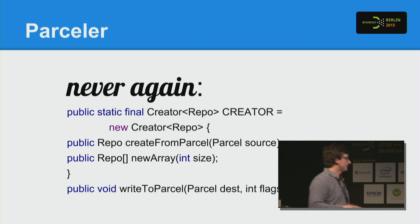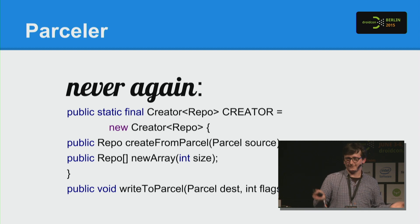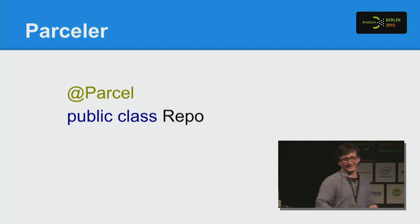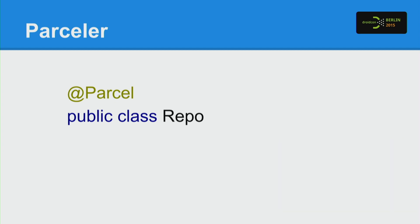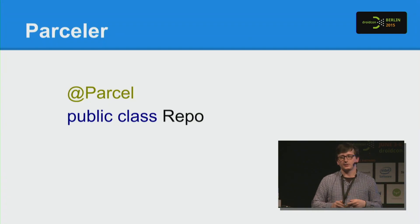Parceler — never again boilerplate Parcelable code. We add one annotation and the class is Parcelable. It works in about 90% of cases. There are some edge cases like cyclic references where you can provide your own code. So if you have 90% normal classes and just one that needs manual code, you still save a lot. You use Parceler's wrap and unwrap methods. Again, one annotation and a lot of saved code.